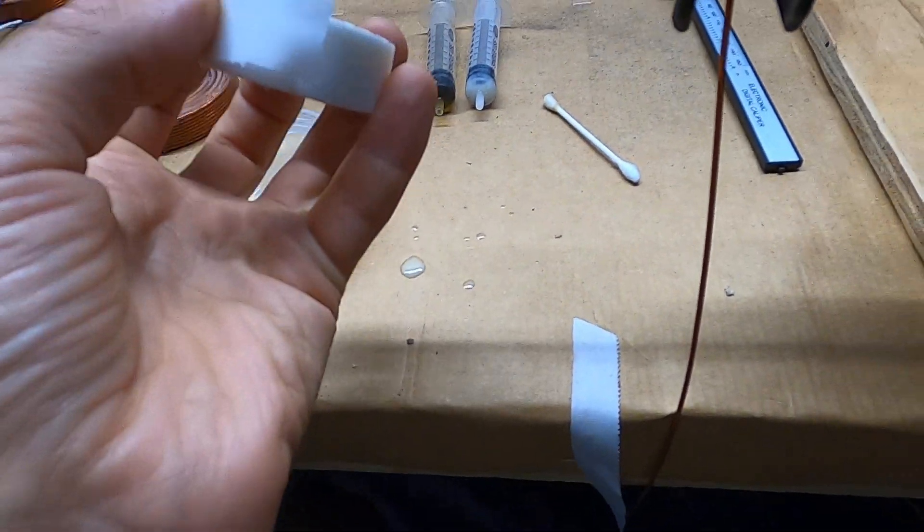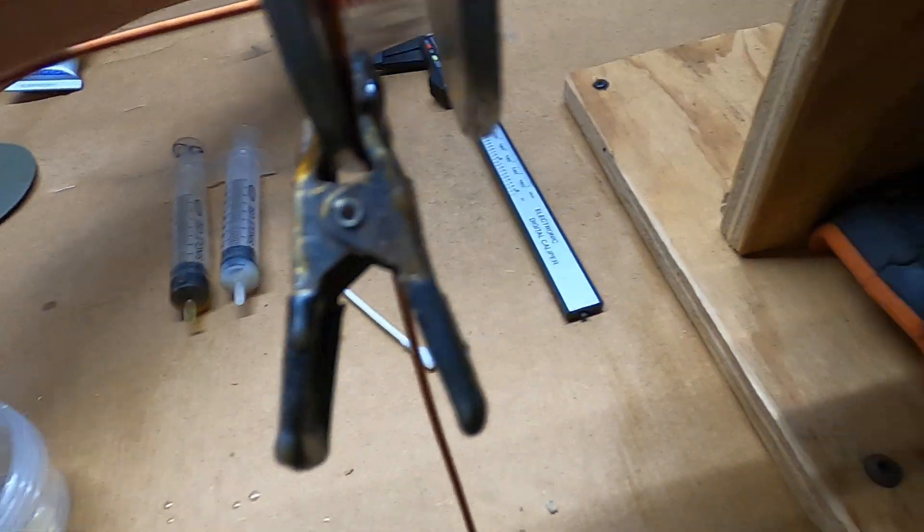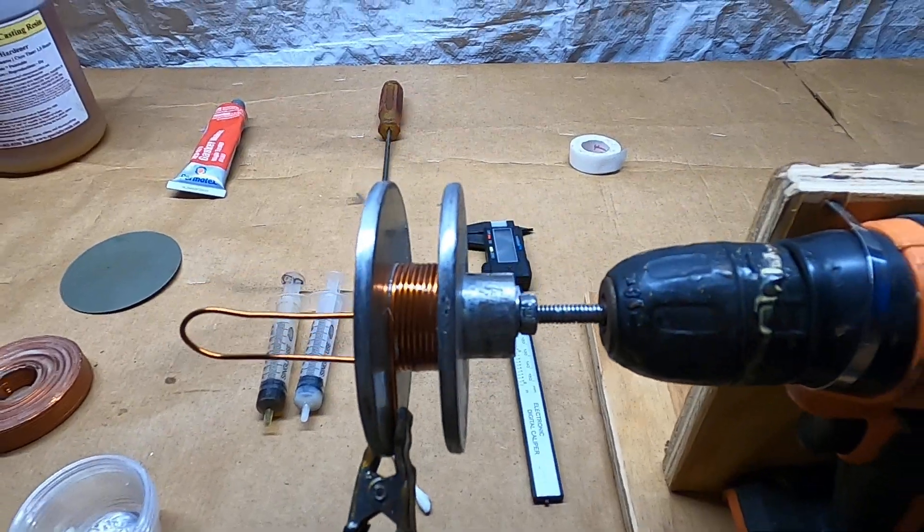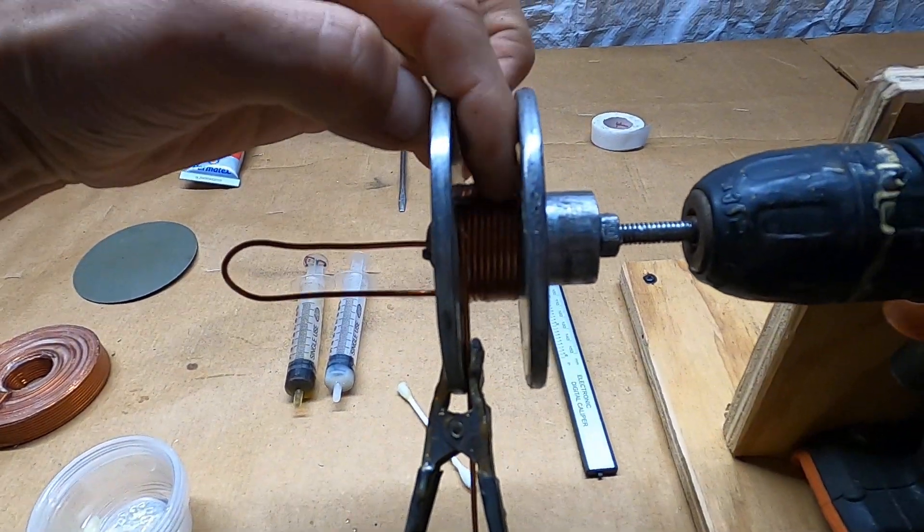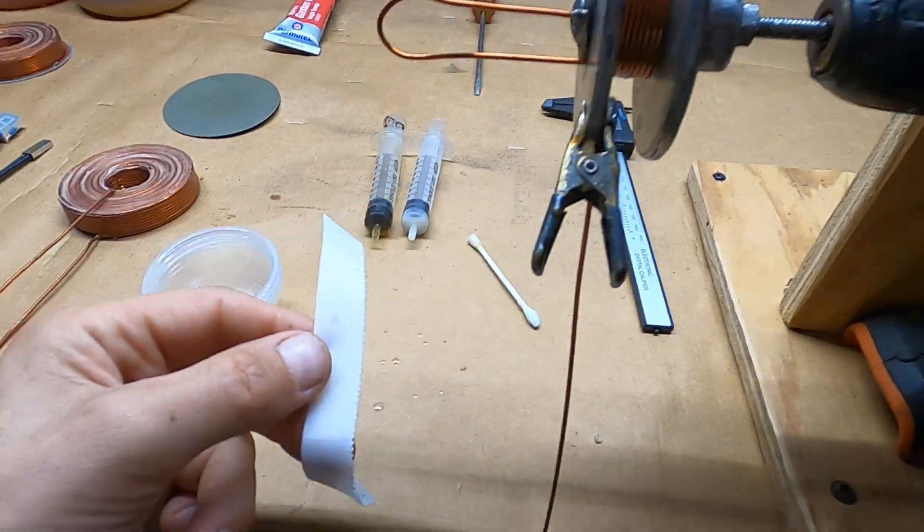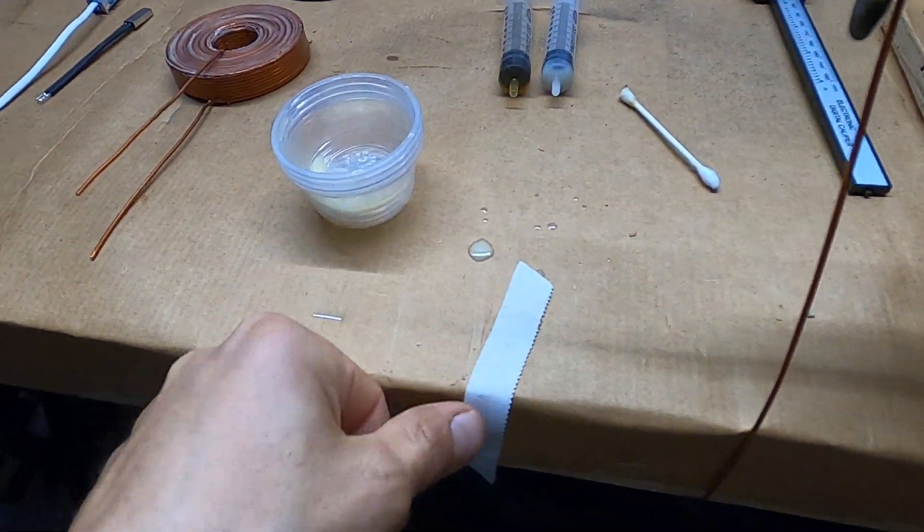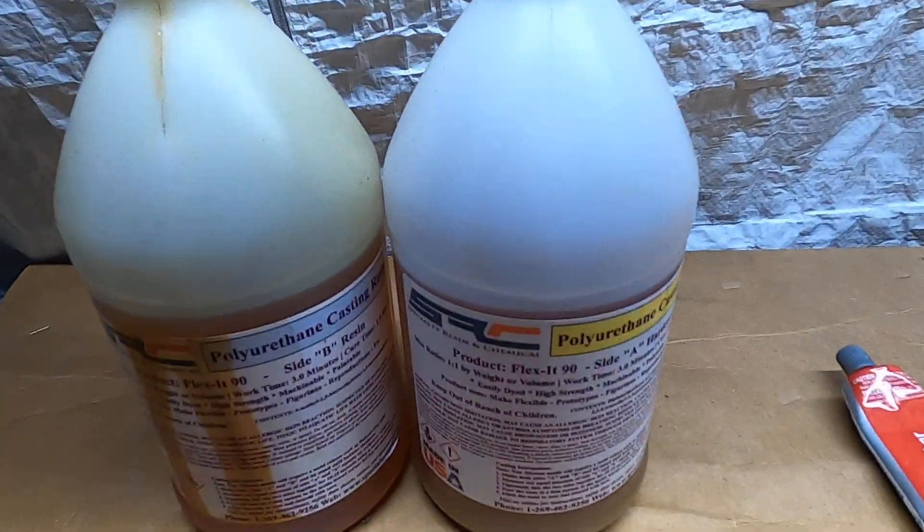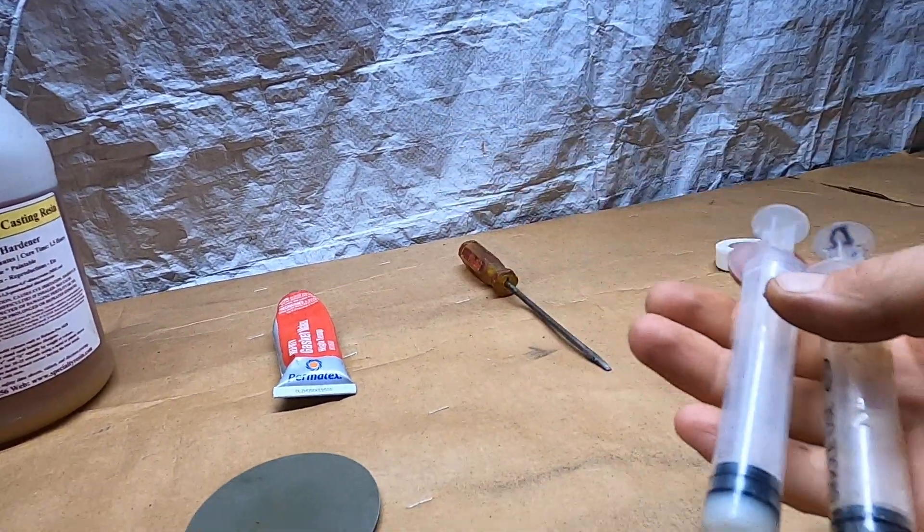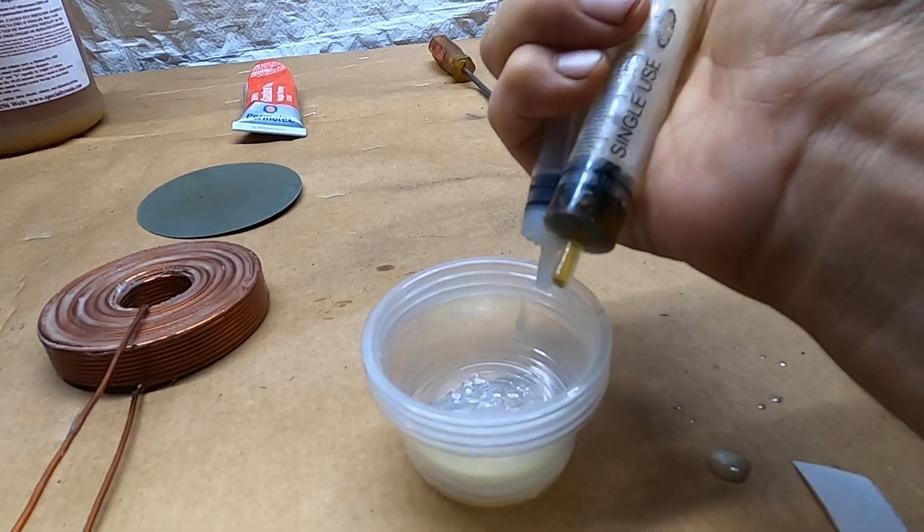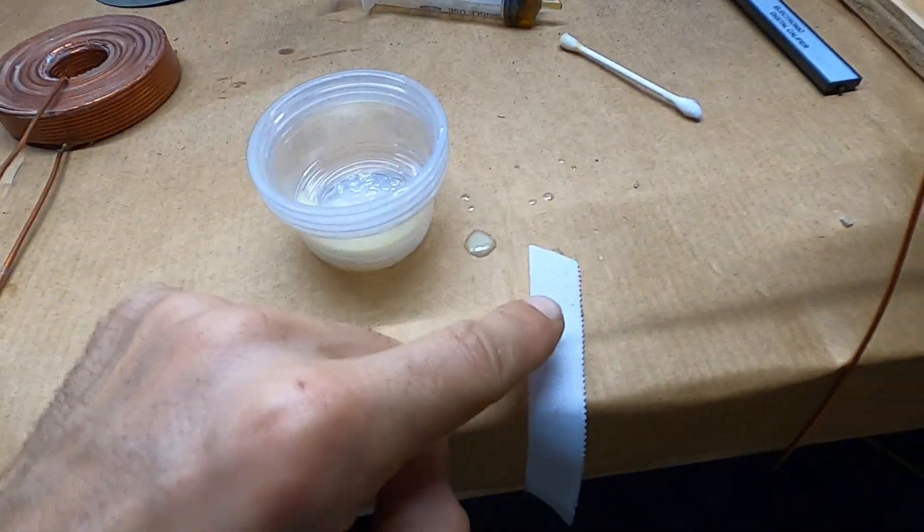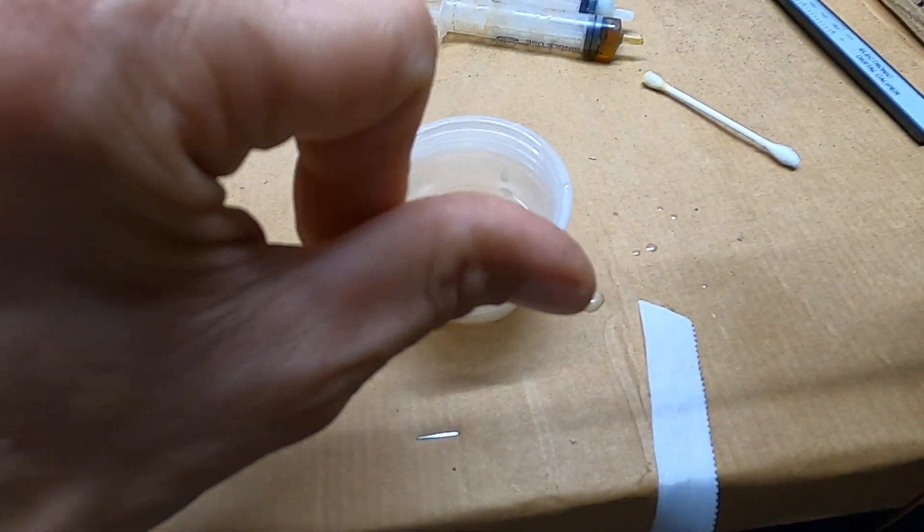So what I do is I wind one layer and then I measure how much tape I need just to cover that layer. Once I measure how much tape I need I use this Flex at 90 and I put it in a syringe here, then I'll squeeze out just enough for this layer.